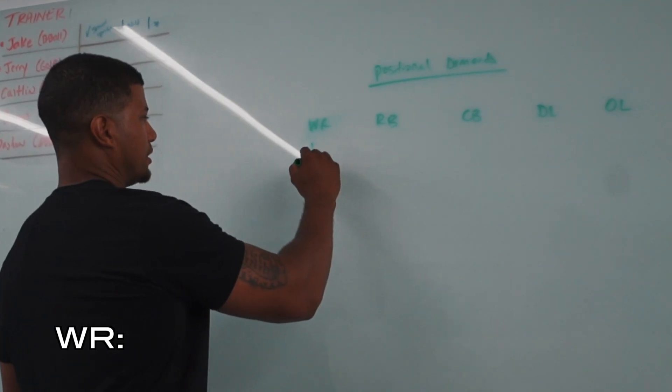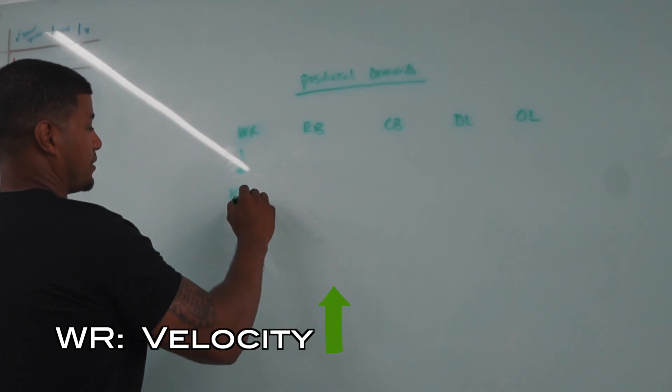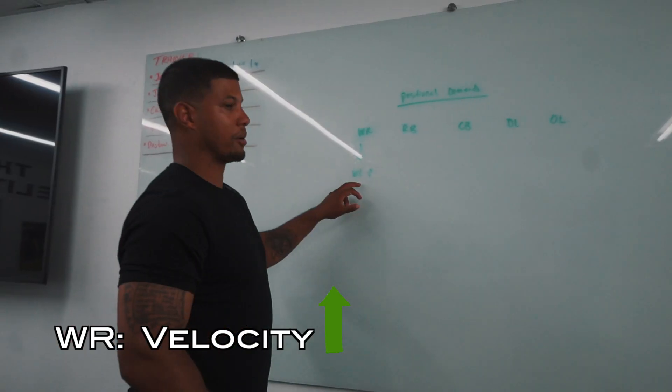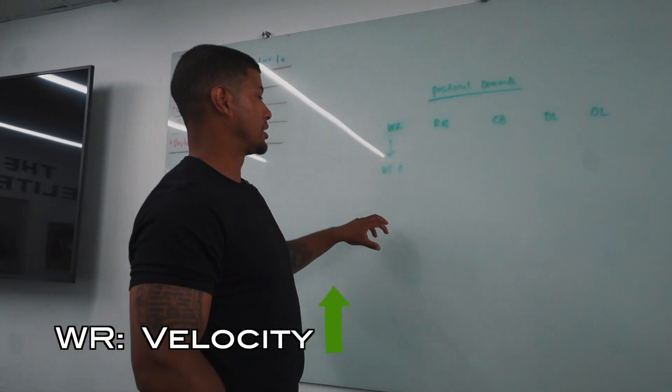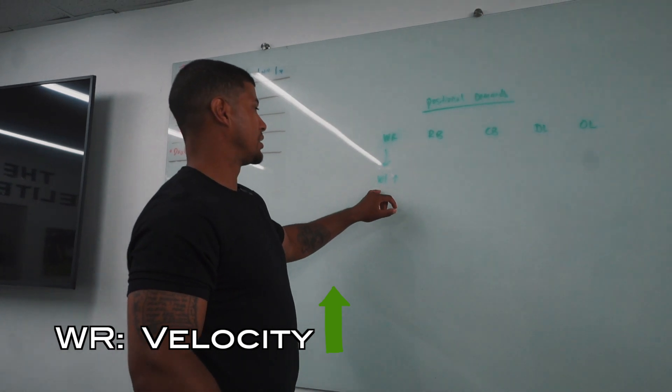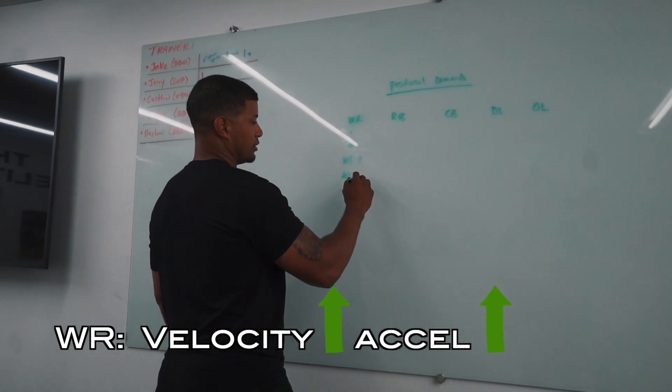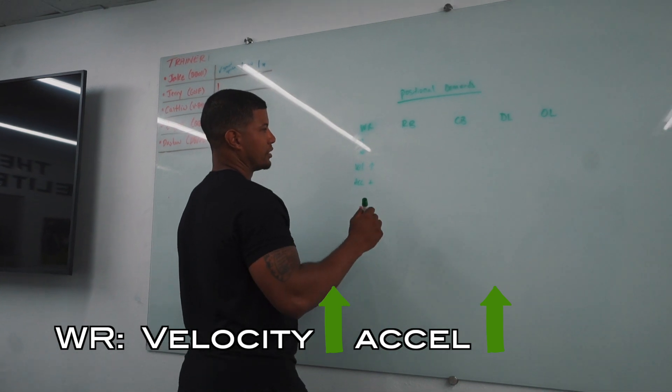So for a wide receiver, we need to have probably a pretty high velocity. So we have to be able to run some longer routes, good deceleration ability, but higher velocity. Their acceleration needs to be pretty good too, but probably pretty even.